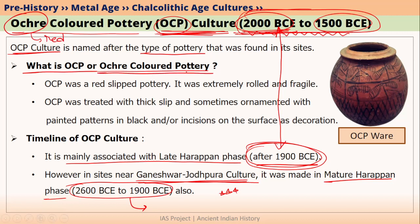Ochre Coloured Pottery is a type of red colour pottery. This pottery had a red slip — slip is nothing but a wet coating made on the pottery, and after firing, this wet coating becomes a smooth surface.